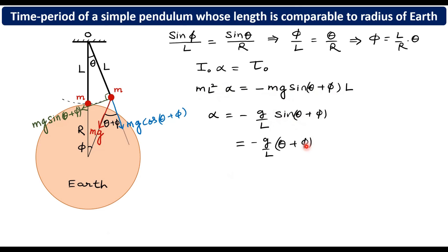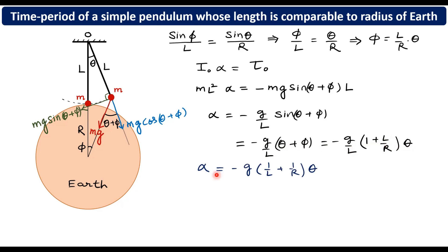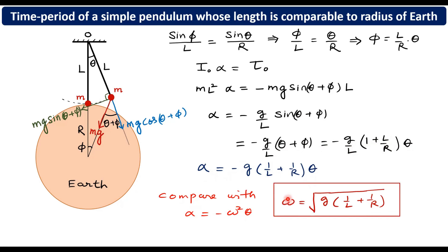Substituting the value of phi from the geometrical equation, we get alpha equals minus (g/L) times (1 + L/R) times theta. Taking L into the bracket: alpha equals minus g times (1/L + 1/R) times theta. Comparing with the standard SHM form alpha equals minus omega squared times theta, we find omega squared equals g times (1/L + 1/R). Therefore omega equals the square root of g times (1/L + 1/R). That is the angular frequency of this SHM.